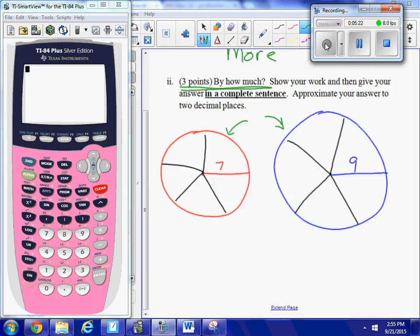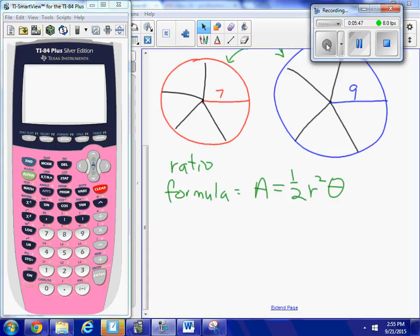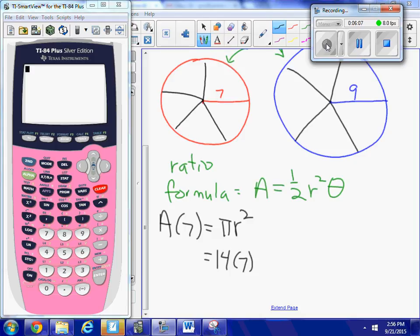One is a ratio approach. The other is a formula, which is the area of a sector equals one-half r squared theta. Let's take the ratio approach first. First, let's look at my seven-inch pizza. What is the area of the seven-inch pizza? The area of a circle is πr². So the area of this entire pizza right here is equal to π times 7².